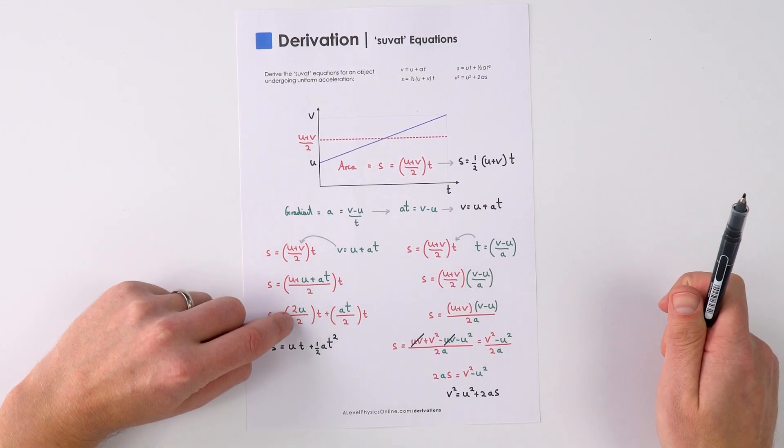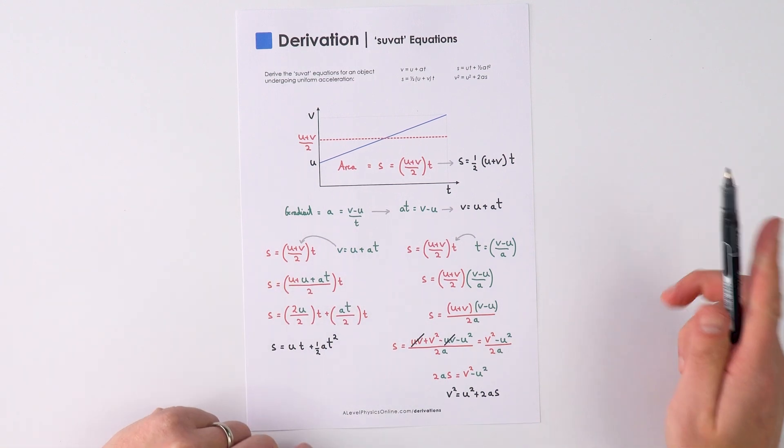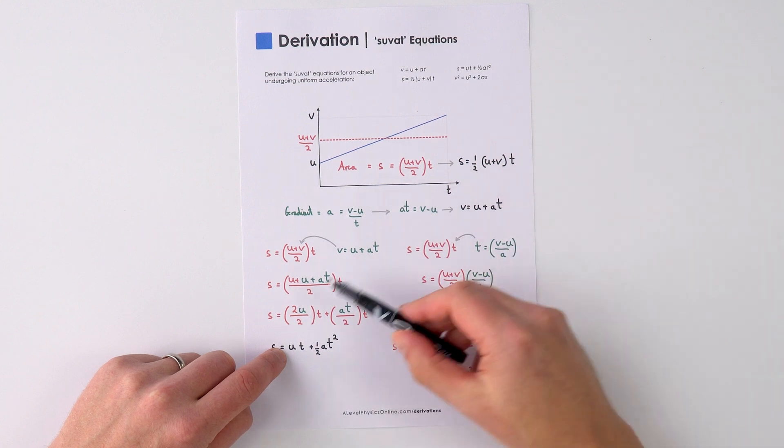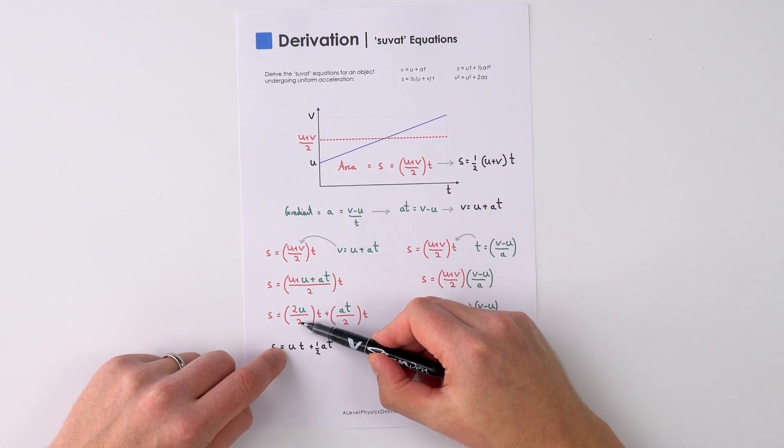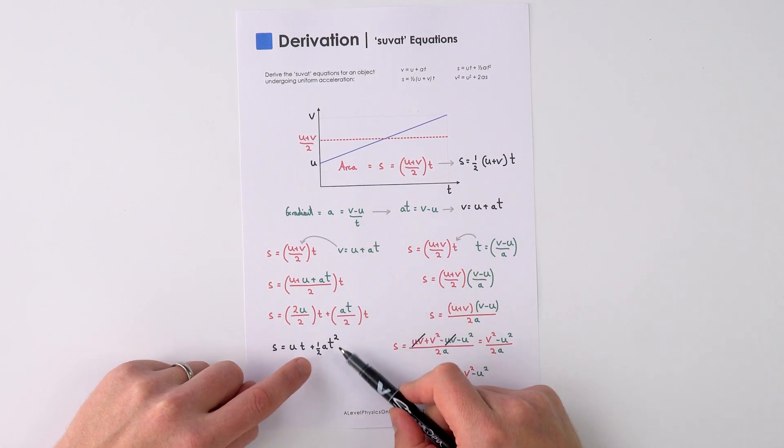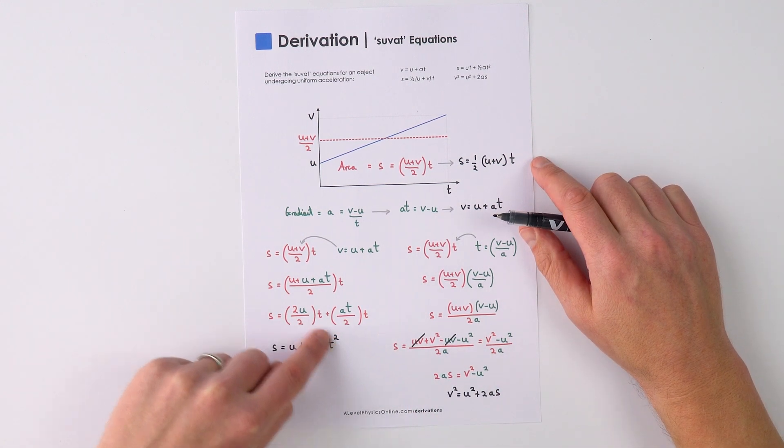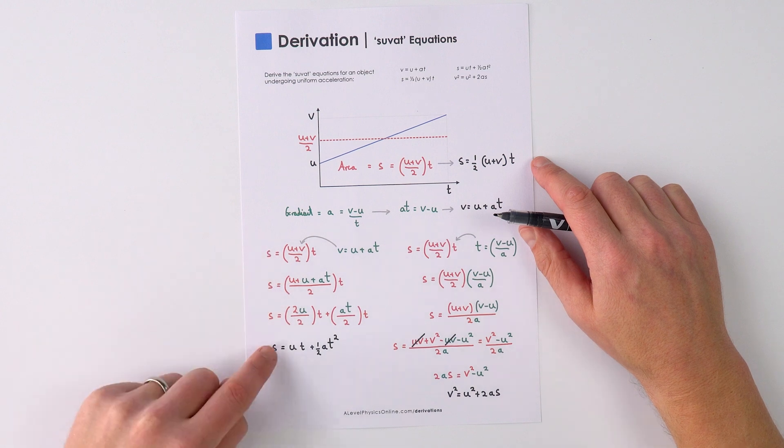We then have two u over two multiplied by t plus we have at over two times t. Now that's two u over two is just equal to ut plus a half at squared. So this equation here really useful and that's one way that we can derive it.